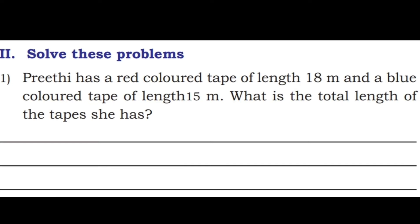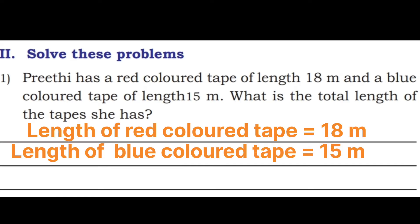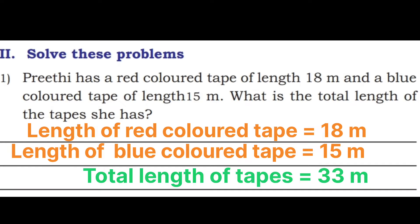First problem: Preeti has a red color tape of length 18 meters and a blue color tape of length 15 meters. What is the total length of the tapes she has? Length of red tape = 18 m; length of blue tape = 15 m. Total: 8 + 5 = 13, write 3 carry 1; 1 + 1 = 2; 2 + 1 = 3. Total length = 33 meters.